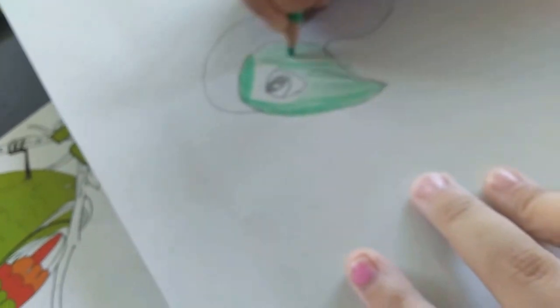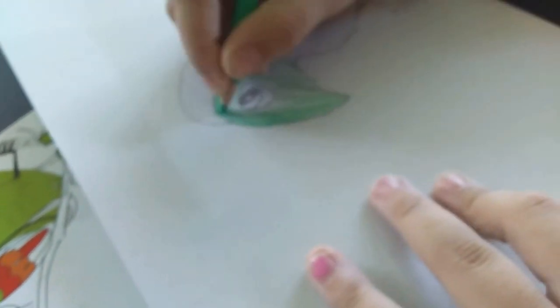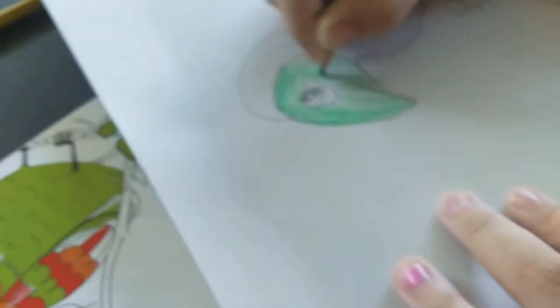Blue-footed boobies are seabirds. So I guess if you wanted to draw the background you would draw the sea. Or you could draw it flying if you wanted. It could make a different wing thing.